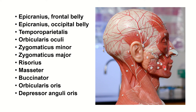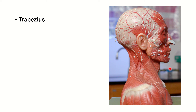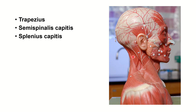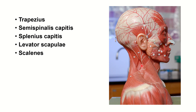Depressor anguli oris — from the corner of the mouth — and depressor labii inferioris. Trapezius muscle is located in the back. Splenius capitis in this area. Levator scapulae. Scalene muscles — there are three of them; you can only see part of them here.